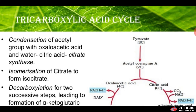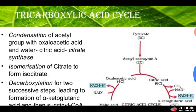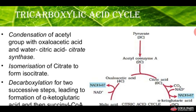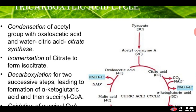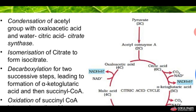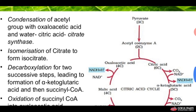In the mitochondria, acetyl coenzyme A reacts with oxaloacetic acid and produces citric acid. This reaction is catalyzed by citrate synthetase. Then isomerization of citrate produces isocitrate, followed by decarboxylation in two successive steps leading to the formation of alpha-ketoglutaric acid and then succinyl coenzyme A.